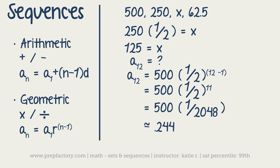The important thing to note for both arithmetic and geometric sequences: you're always adding, so if you're subtracting, express it as adding a negative number; and if you're dividing for a geometric sequence, express it as multiplying by a fraction.